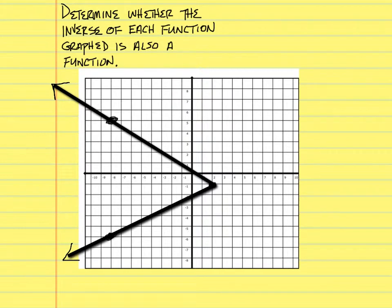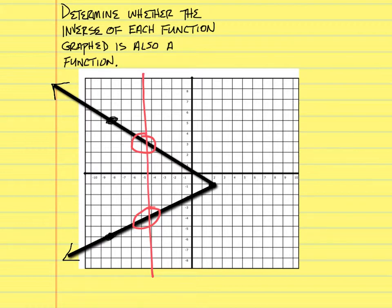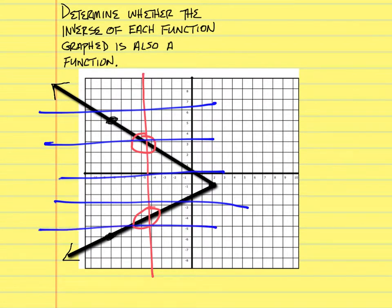Determine whether the inverse of each function graphed is also a function. From before, we had the vertical line test to check if a graph is a function. This graph is not a function — it hits the line twice in two different places. But we're looking for whether the inverse is a function. Instead of the vertical line test, we use the horizontal line test. Drawing horizontal lines in blue — no line crosses the graph in two places, so the inverse of this one is a function.